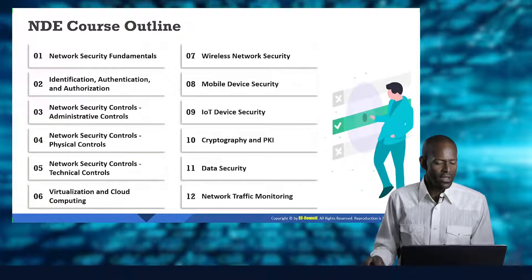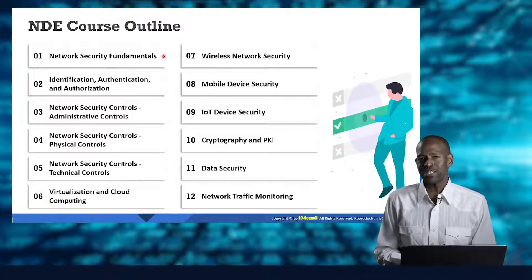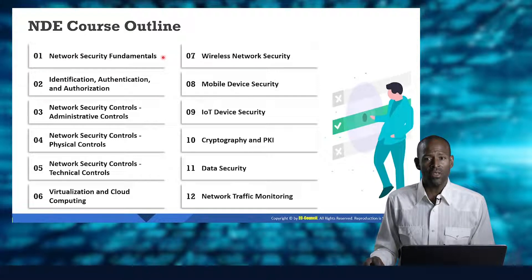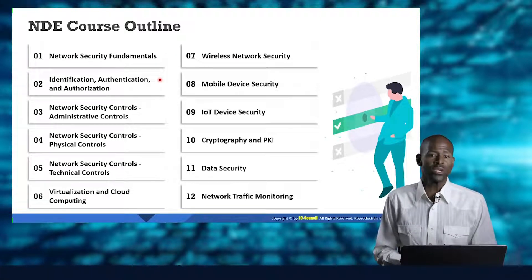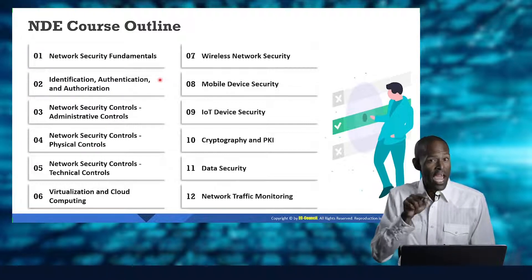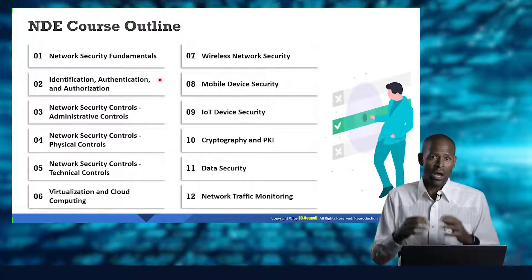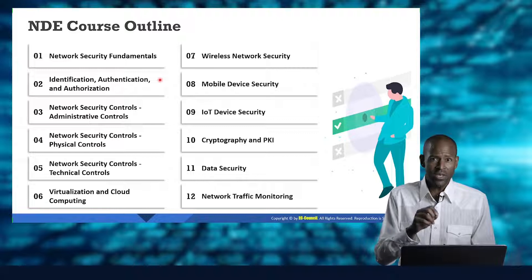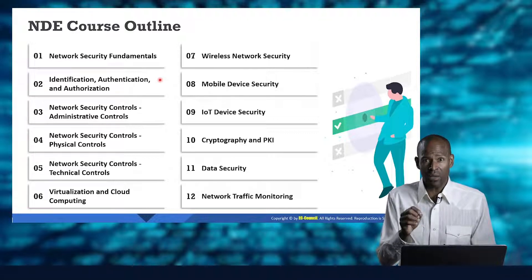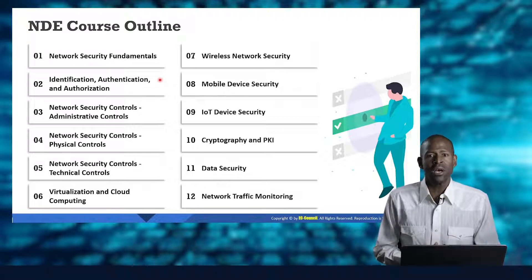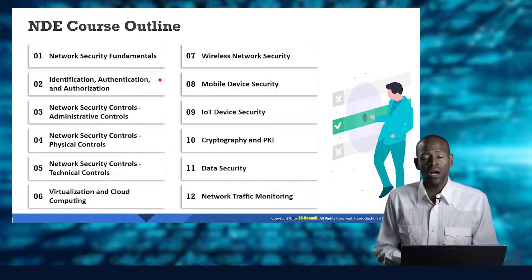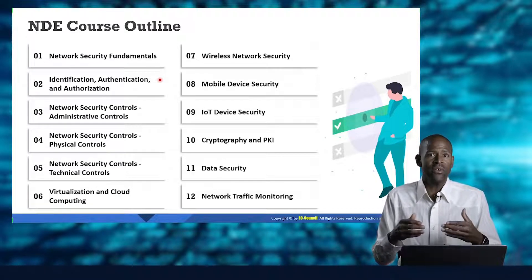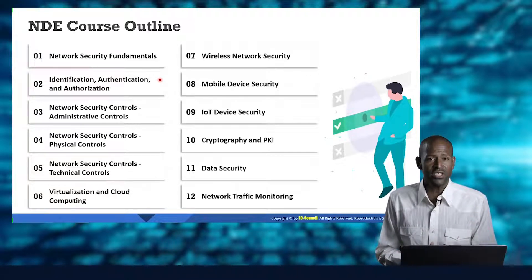So what are we going to be talking about in the NDE? The first thing is network security fundamentals — what is it that we want out of network security. We're also going to look at one of the most important areas: identification and authorization. We often talk about AAA — authentication, authorization, and accounting — but also IAM, Identity and Access Management, which covers the entire system of identification. We'll cover that in that section.